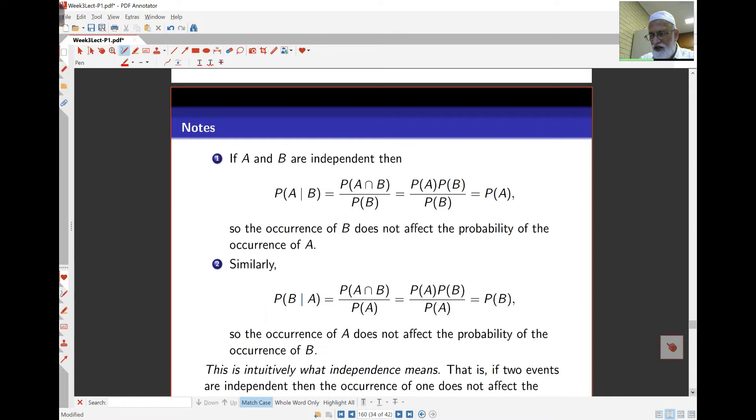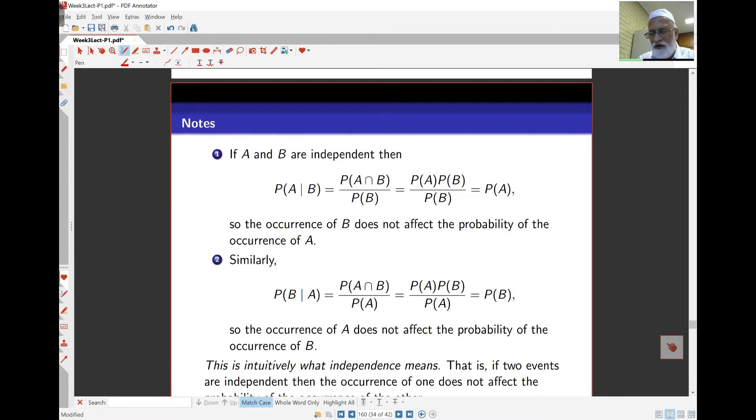Now, as far as the intuition is concerned, if two events are independent, then probability of A given B, where the rule for conditional probabilities is probability of A intersect B over probability of B. Because of independence, I can now write this as probability of A times probability of B over probability of B. These cancel off and get probability of A. So, for independent events, whether B has occurred or not doesn't affect the probability of A. Probability of A given B is the same as probability of A.